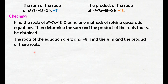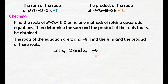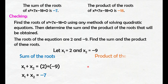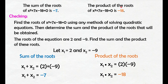Find the sum and the product of these roots. Let x sub 1 equals 2 and x sub 2 equals negative 9. For the sum of the roots: x sub 1 plus x sub 2 equals 2 plus negative 9, which is negative 7. This matches our earlier answer of negative 7. And then check the product: 2 times negative 9 is negative 18. Same answer — it matches.